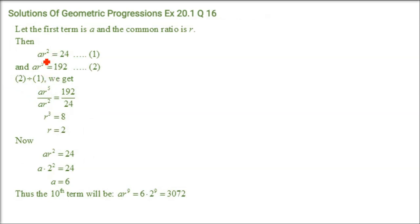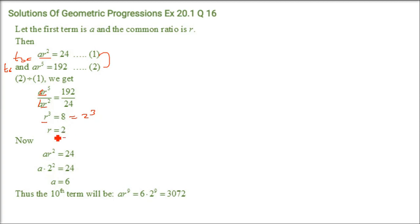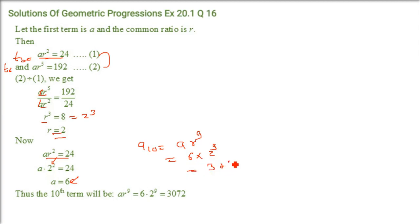Last problem: in a GP, the 3rd term is 24 and the 6th term is 192. Find the 10th term. Dividing T6 by T3: AR^5/AR^2 = R^3 = 192/24 = 8 = 2^3, so R = 2. Substituting back: A·R² = 24, so A·4 = 24, giving A = 6. The 10th term is A·R^9 = 6·2^9 = 3072.